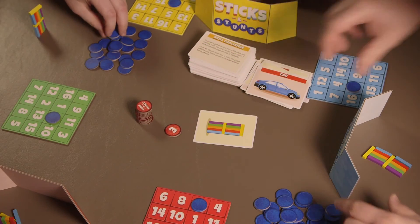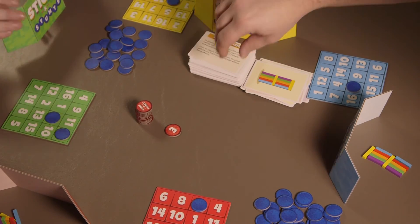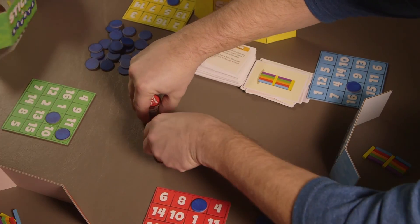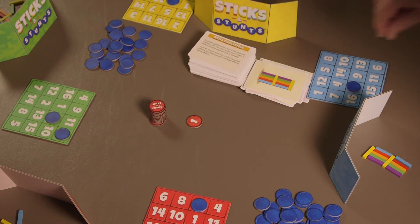When a round is complete, place the activity card in the discard pile and return the number token to the bottom of the number token pile. The player to the left is the next card reader and the next round begins.